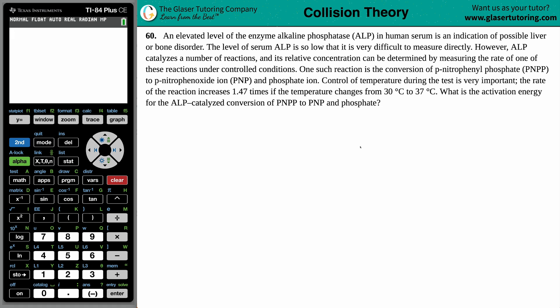The level of serum ALP is so low that it's very difficult to measure directly. However, ALP catalyzes a number of reactions and its relative concentration can be determined by measuring the rate of one of these reactions under controlled conditions.